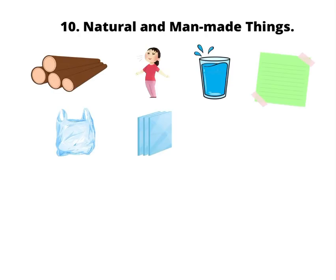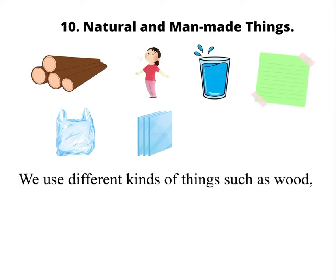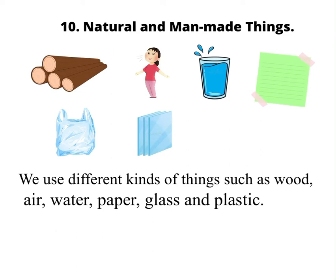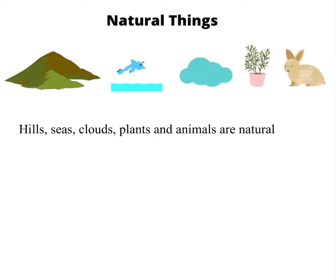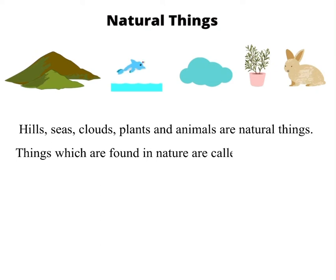Chapter 10: Natural and Man-Made Things. We use different kinds of things such as wood, air, water, paper, glass, and plastic. Natural things: hills, seas, clouds, plants, and animals are natural things. Things which are found in nature are called natural things.